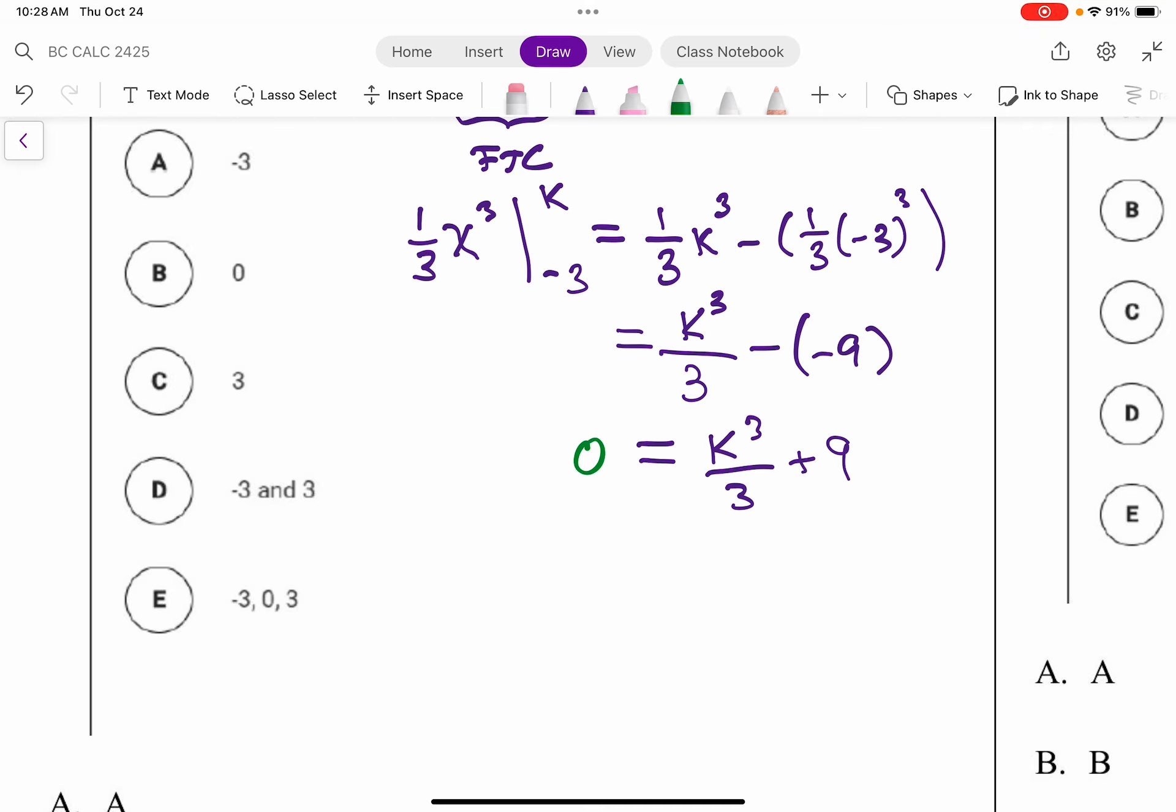And so I'm going to minus 9, I'm going to times by negative 3, and then cube root. When you cube root, you get negative 3.